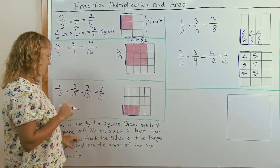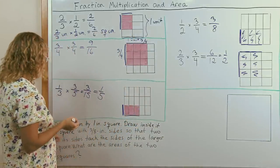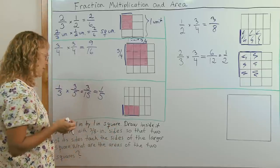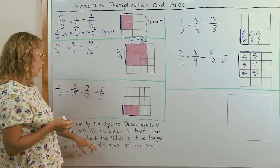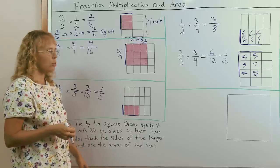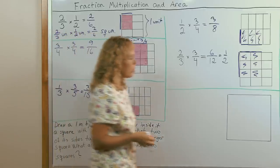And then inside it, draw inside it another square with three eighths inch sides, so that two of its sides touch the sides of the larger square. And what are the areas of the two squares?